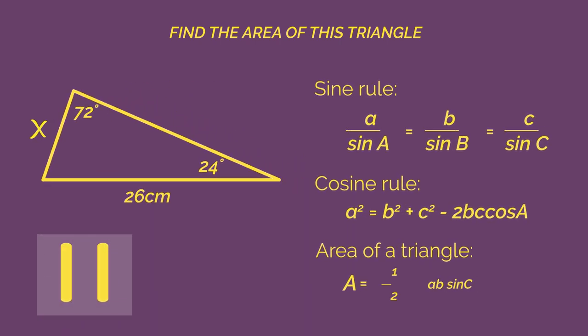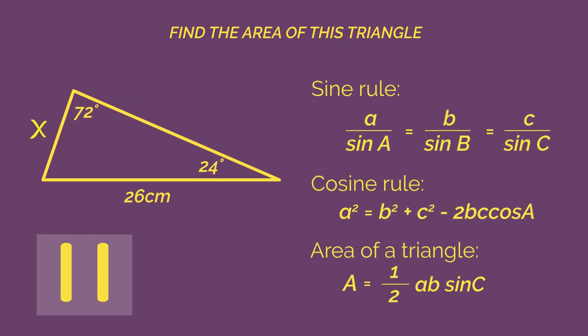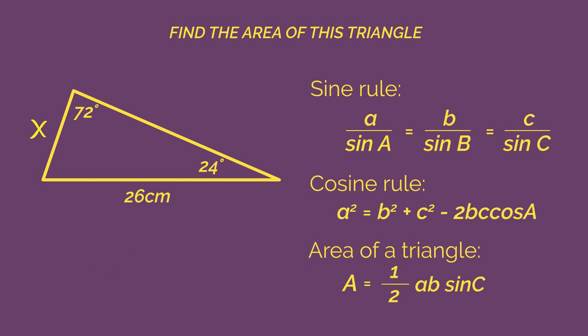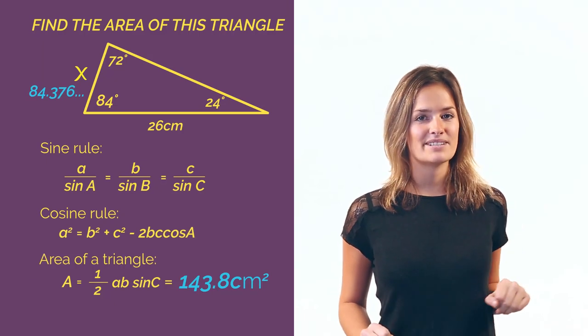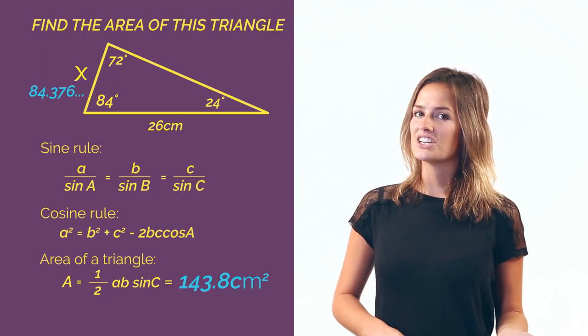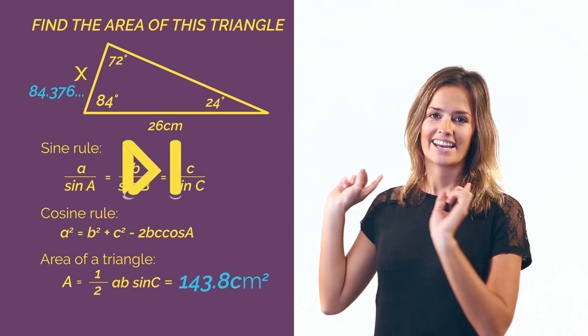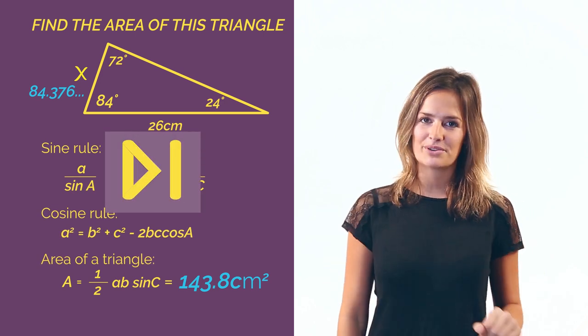Pause the video, work out side x and then find the area of the triangle and click play when you're ready. Did you get 143.8 centimeters squared? If you did and you want to skip the explanation, click here. Otherwise, keep watching.